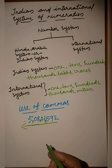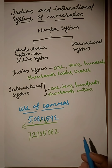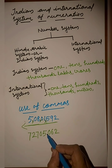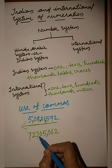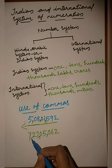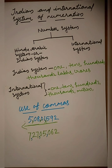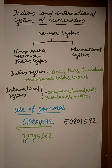Let's check the next example of how to put commas in a number using the Indian system. The first comma is placed after three digits from the right, the second comma after two more digits, and the third comma after another two digits. That is easy to follow.